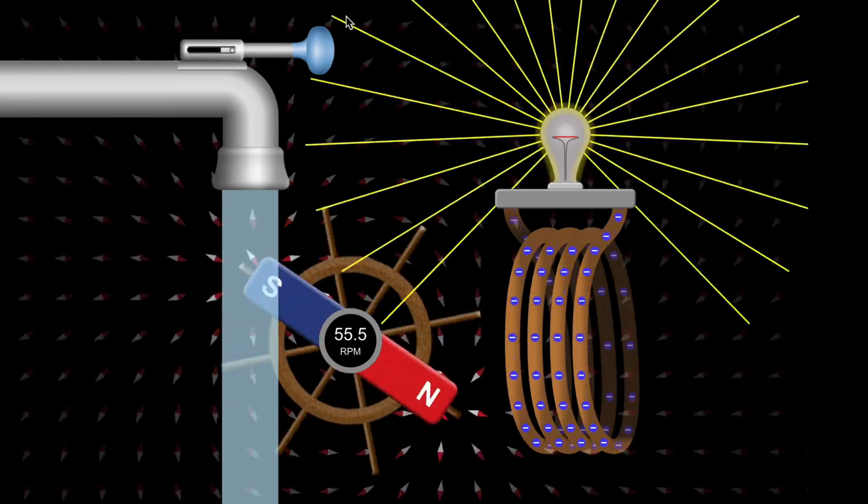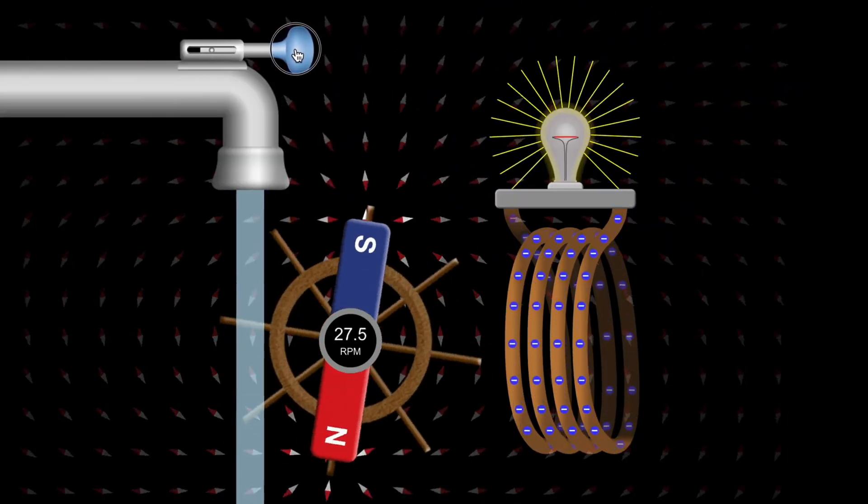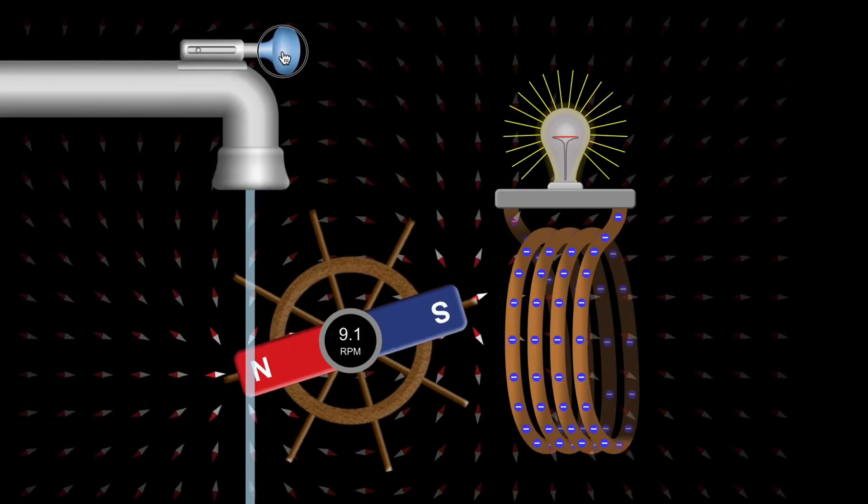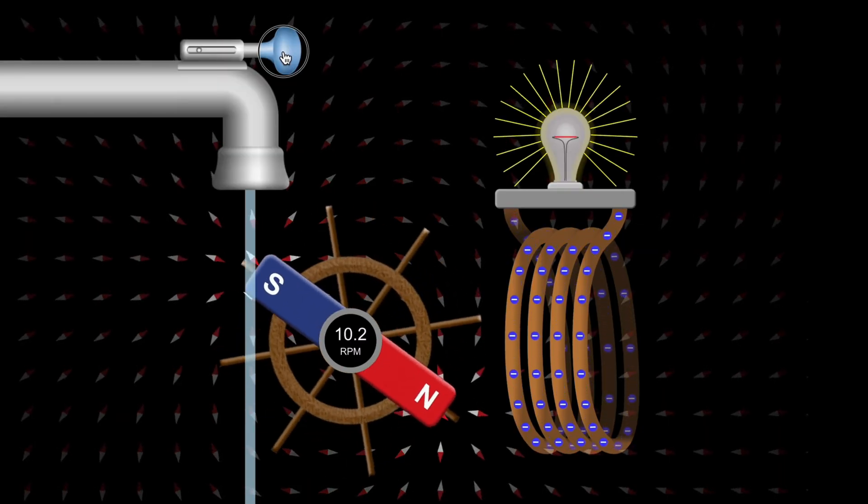The magnetic field is changing more rapidly. And again, the bulb glows brighter. Faster spin means faster change in the magnetic field. And that creates stronger electricity.